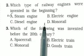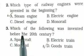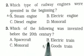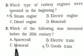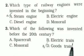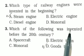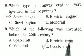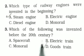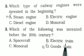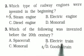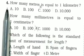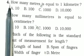Question 3: Which of the following was invented before the 20th century? A. spacecraft, B. electric train, C. monorail, D. goods train. The right answer is D. goods train, which was invented before the 20th century.